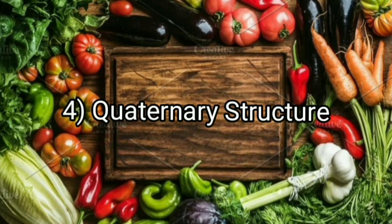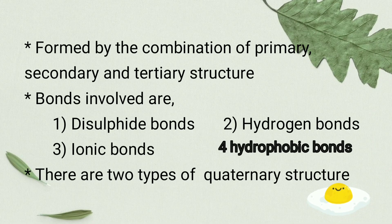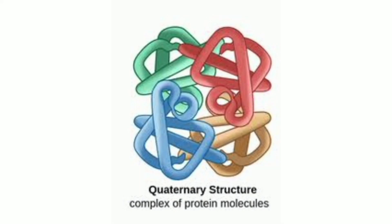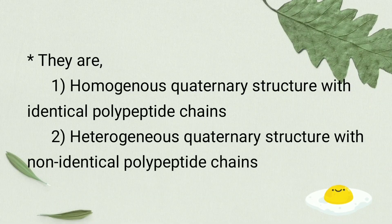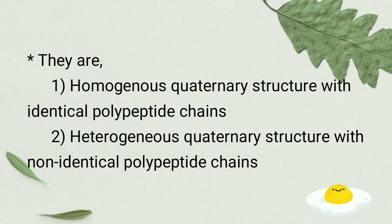Quaternary structure is a complex structure of protein and it is the fourth level of protein structure. It is formed by the combination of primary, secondary, and tertiary structures of protein. The bonds involved are disulfide bond, hydrophobic bond, ionic bond, and hydrogen bond. There are homogeneous and heterogeneous quaternary structures. In homogeneous quaternary structure, the polypeptide chains present are of the same kind and are identical. In heterogeneous quaternary structure, the polypeptide chains present are non-identical.